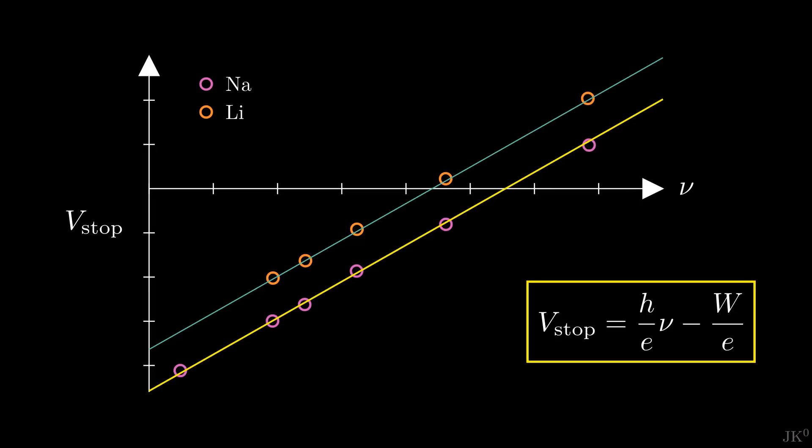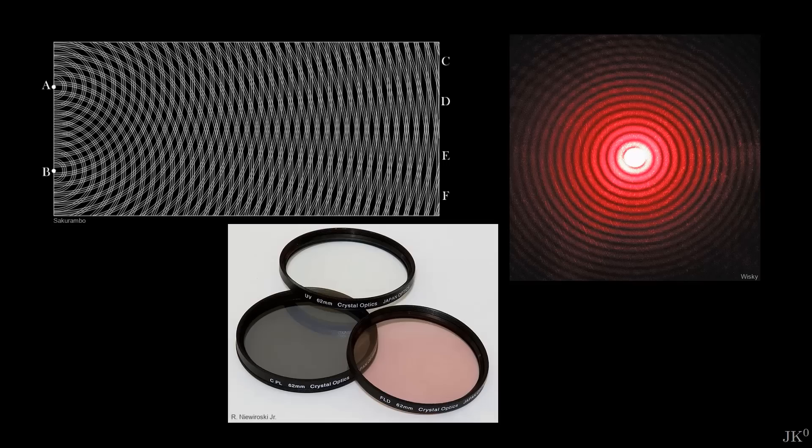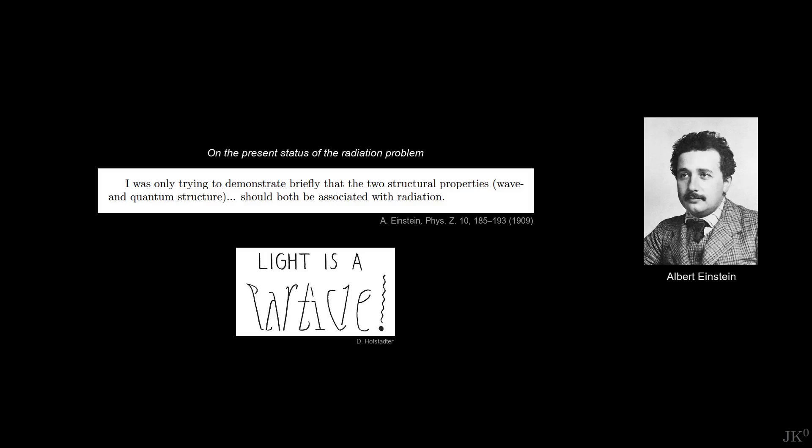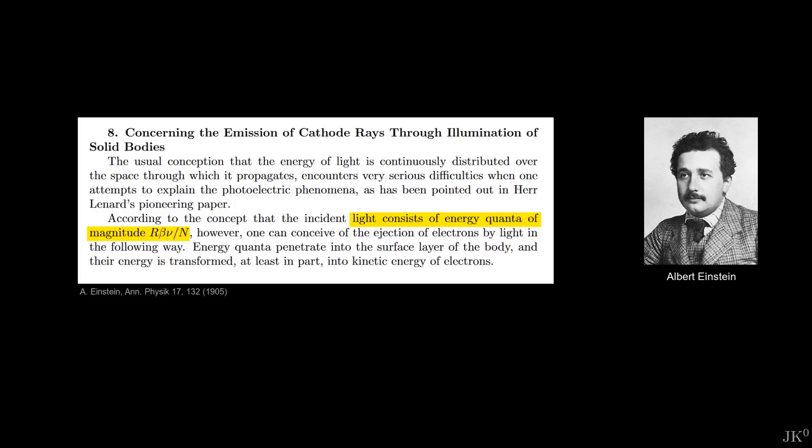Millikan proved Einstein right. Oddly enough, all experiments confirmed the wave properties of light. And for most physicists, the idea of a particle of light was still hard to accept. Einstein proposed the particle-wave duality of light. But how could light behave as a wave, and sometimes as a particle?